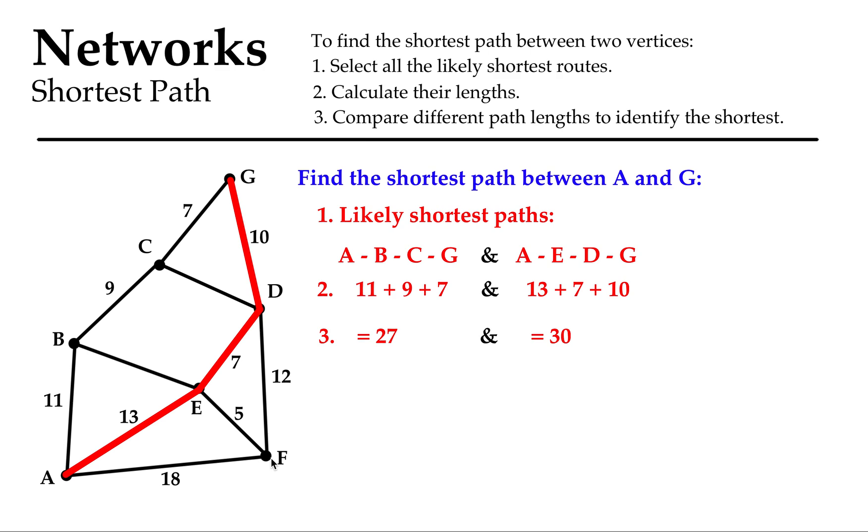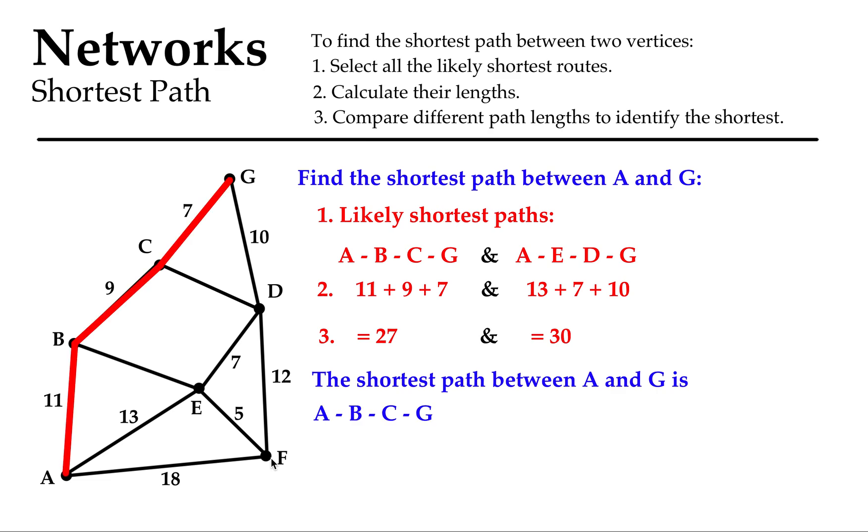27 seems to be a smaller number than 30. I'm being silly, but still, so the shortest path between A and G is A, B, C, G in red there with 27 units in its length. So no fancy algorithms there, it's just looking at each of the possibilities and adding them up and seeing which version, which combination of vertices, is going to get you there quickest.